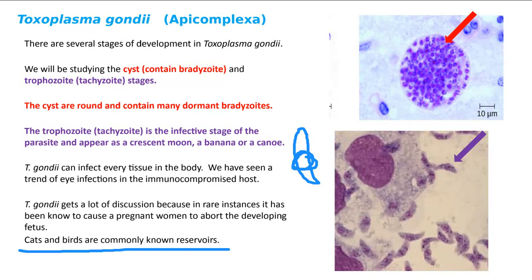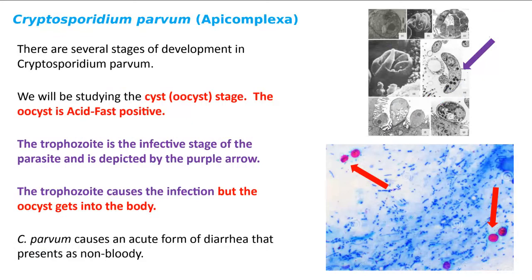The last organism for the day is Cryptosporidium parvum, also in the Apicomplexa. This is the only one you can learn by color. The pink arrow points to the trophozoite. Since Cryptosporidium is acid-fast and we can screen for it using an acid-fast stain, if you see a hot pink spherical structure, say it's Cryptosporidium. Notice all the debris in the environment — what infection does it cause? Dysentery.